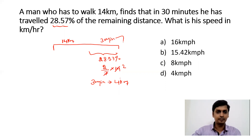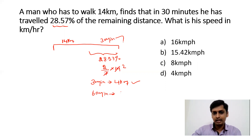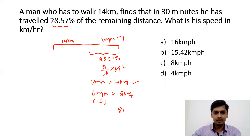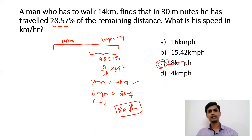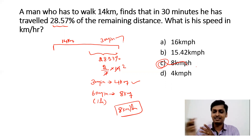Speed = distance ÷ time. In 30 minutes he covered 4 km, so in 60 minutes he would cover 8 km. Therefore his speed is 8 km/h. That is the answer for this question.